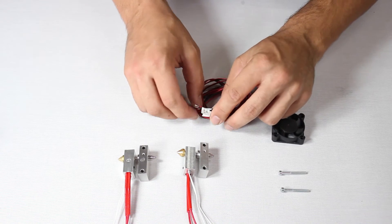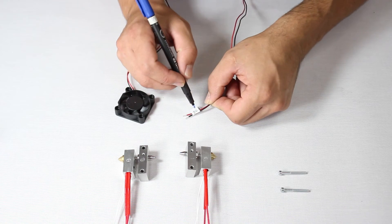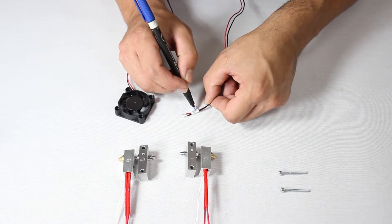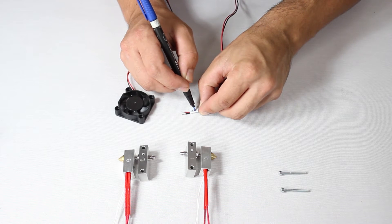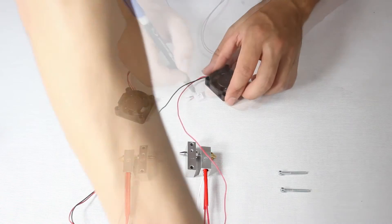With this done, we move onto the extruder fans. For now, we need two, and again, we clearly mark the labels of each, one with a 0, the other with a 1. We remind you, all the components marked with a 0 go together, and all with a 1 go together. Don't get them mixed up.